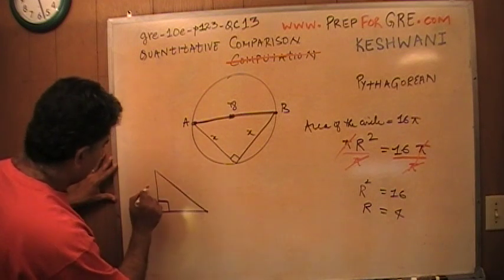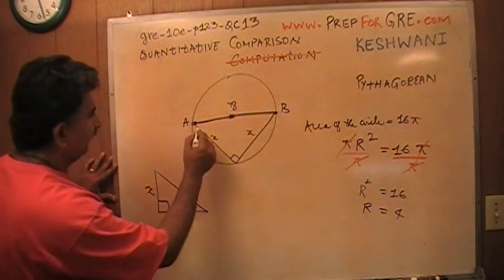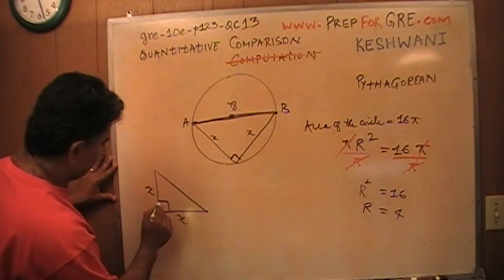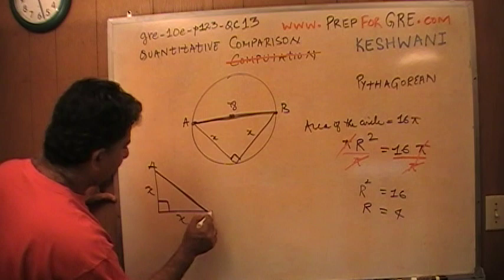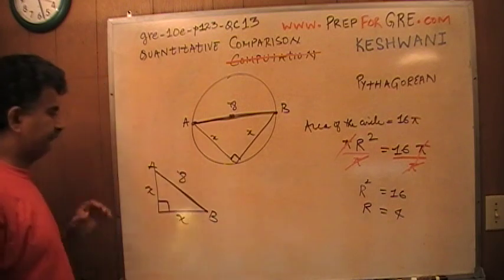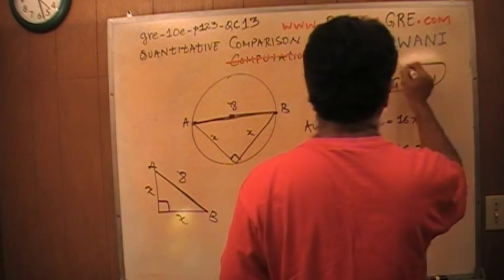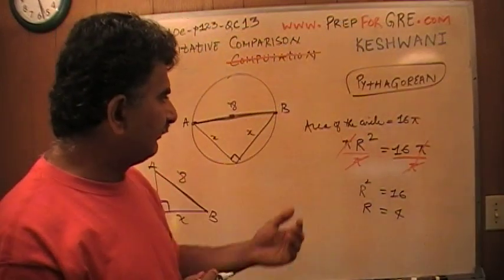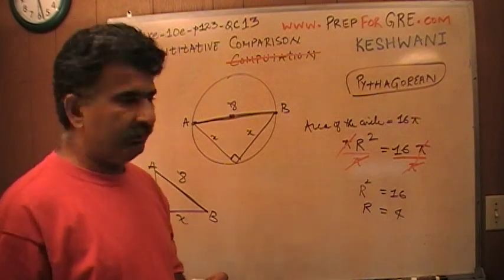This side is x, this side is x, and the side facing the right angle, which is the hypotenuse, this side here which I'm calling AB, is 8. I hope that you know something called Pythagorean theorem.